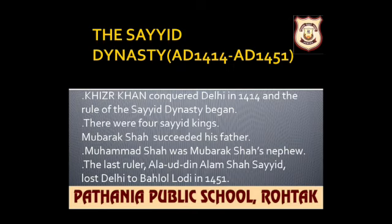The first one is Mubarak Shah. Mubarak Shah succeeded his father. He was a man of vision but the nobles were against him, so most of his time was spent in controlling his nobles.